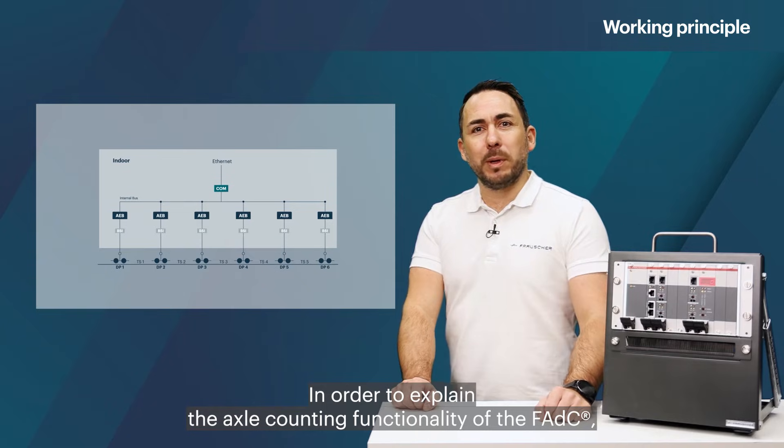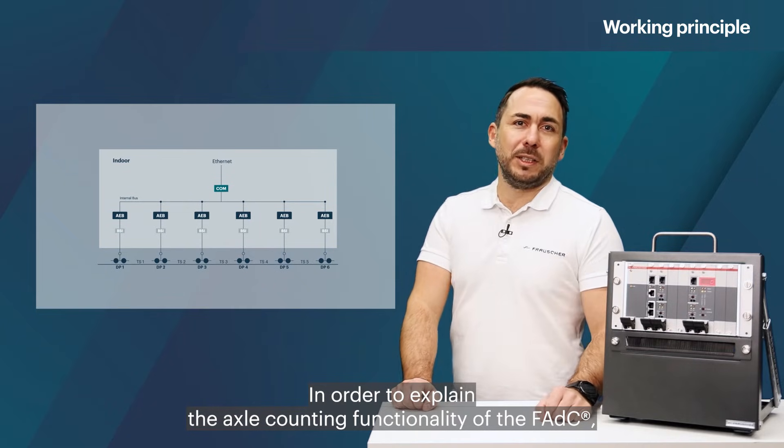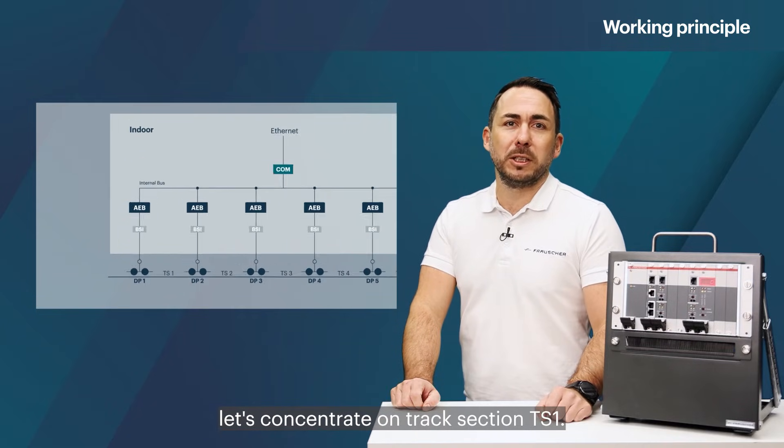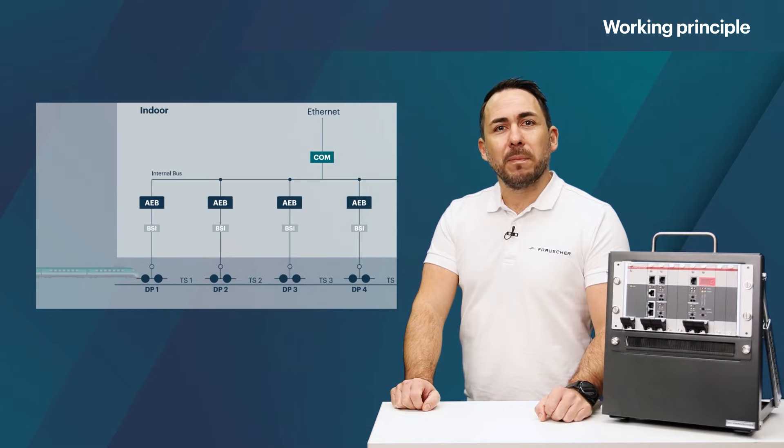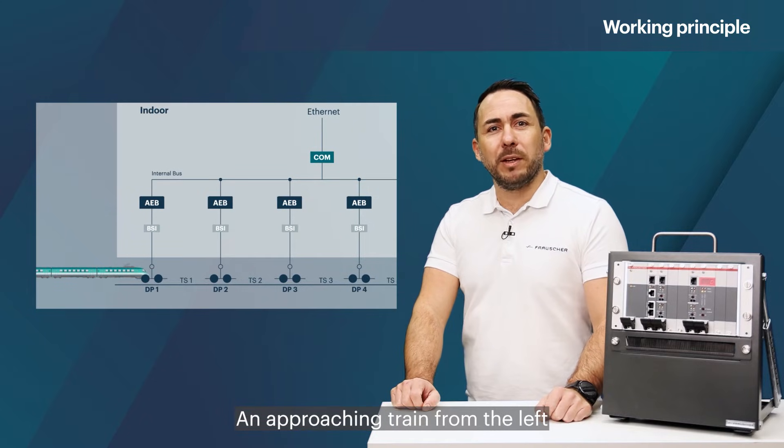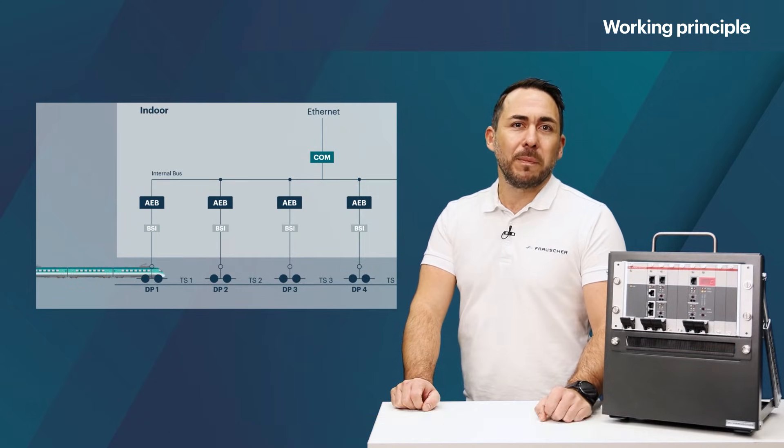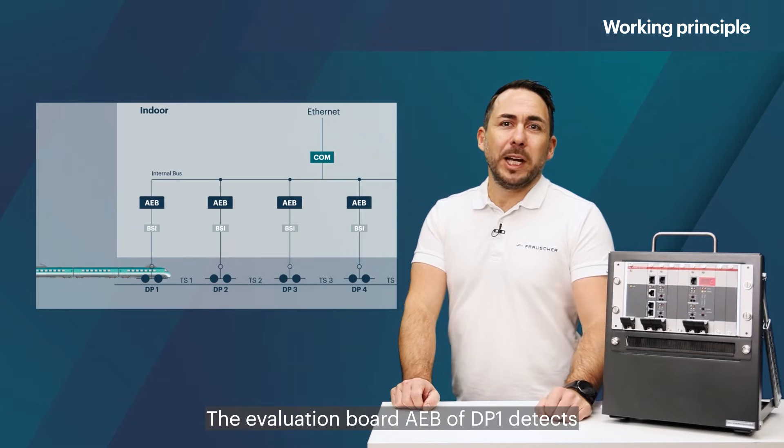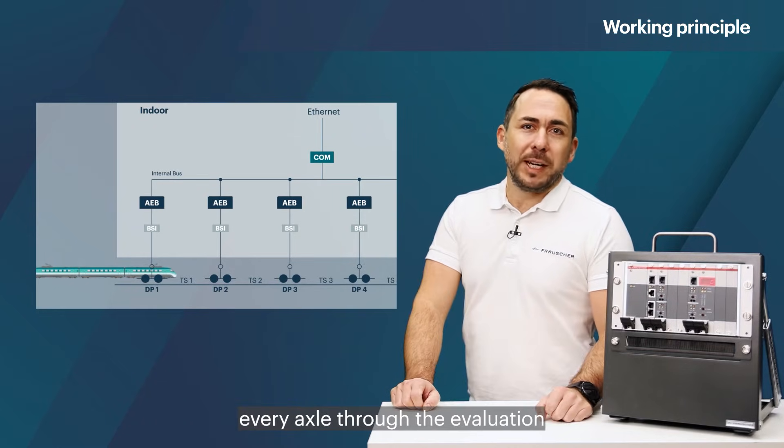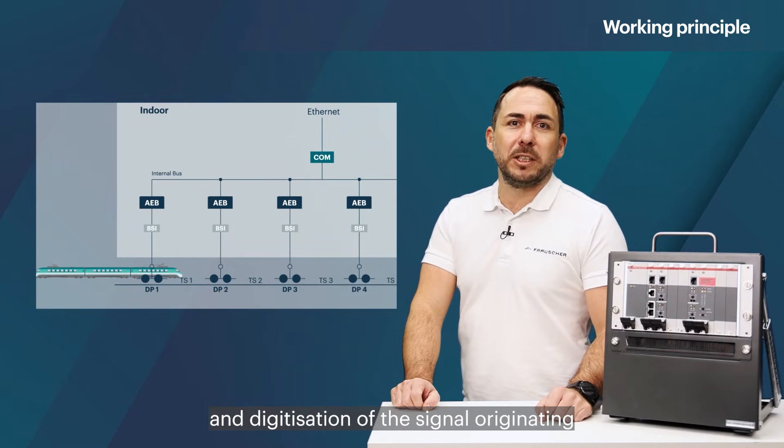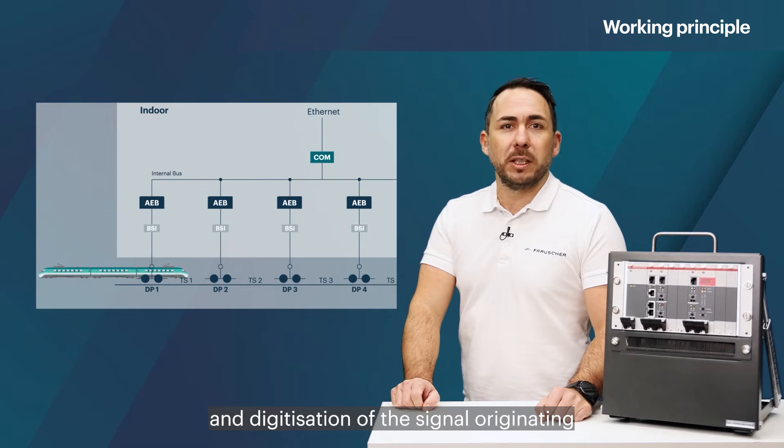In order to explain the axle counting functionality of the FADC, let's concentrate on track section TS1. An approaching train from the left will first be detected by detection point 1, DP1. The evaluation board AEB of DP1 detects every axle through the evaluation and digitization of the signal originating from the wheel sensor.